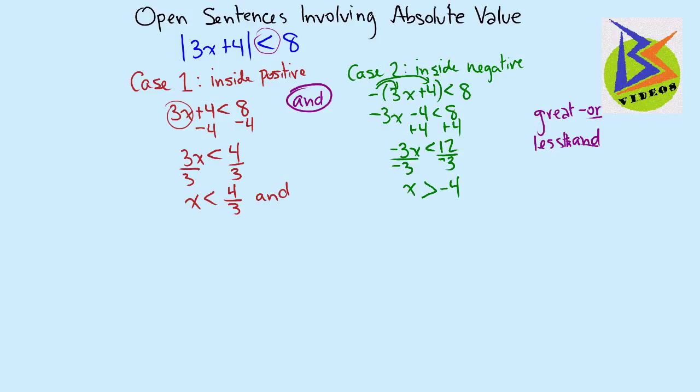So now we have x is less than 4 thirds AND x is greater than negative 4. As we evaluate this idea of AND, we're looking for their overlap. So when we go to graph this, let's draw a number line. Let's go 1, 2, 3, 4.